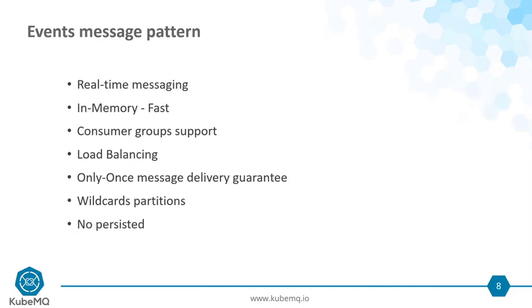The Events PubSub messaging pattern is a real-time messaging pattern — very fast, talking about millions of messages per second. It is in-memory with consumer group support, wildcard support, and load balancing between consumers. It supports at-most-once message delivery guarantee, which means if you didn't consume, the message is lost. It supports wildcard partitions and is not persistent.